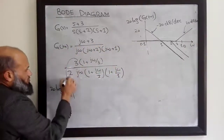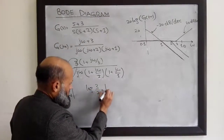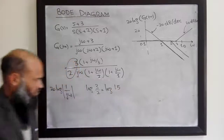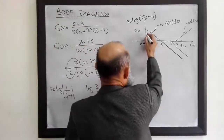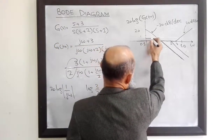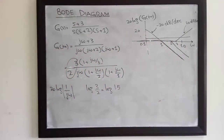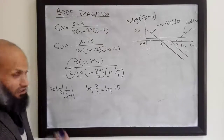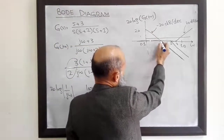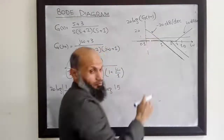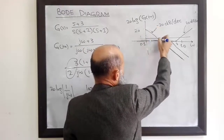The magnitude plot of the constant factor is log of 3 over 2, which is log of 1.5. This comes out to be 3.52 dB. So the overall magnitude plot is obtained by adding all these individual graphs. Up to the first corner frequency, only two factors are playing their roles, and their sum means this graph will be shifted upward by 3.5 dB, giving 23.5 dB.